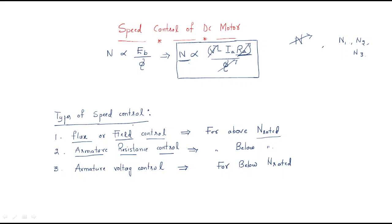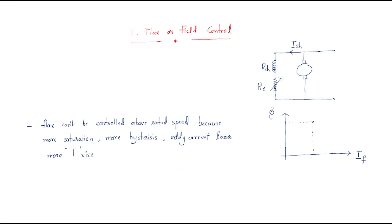First we will discuss the flux or field control method. To understand this flux speed control, we use a DC shunt machine. This is the shunt winding, and this is the external resistance connected to the shunt winding.